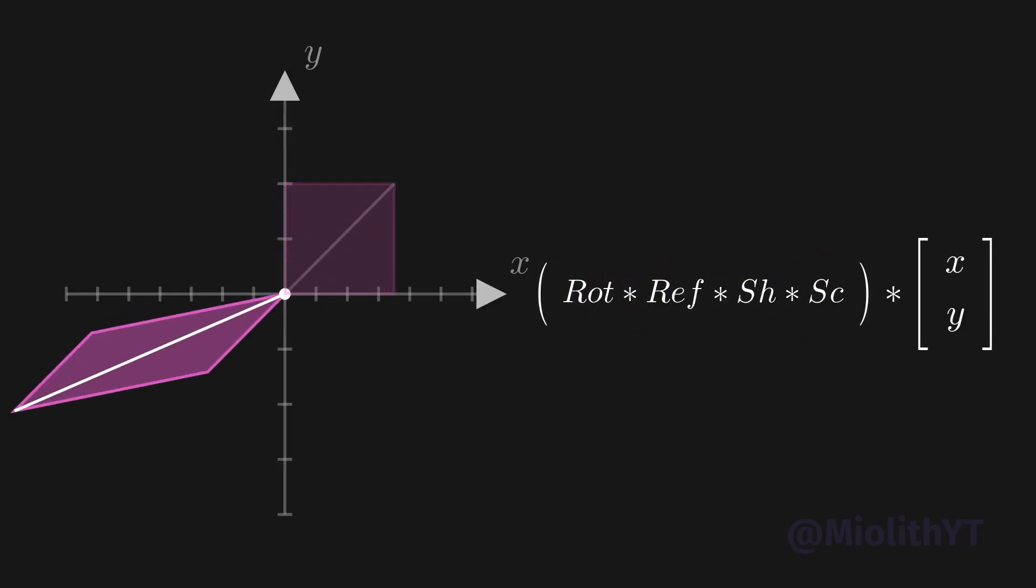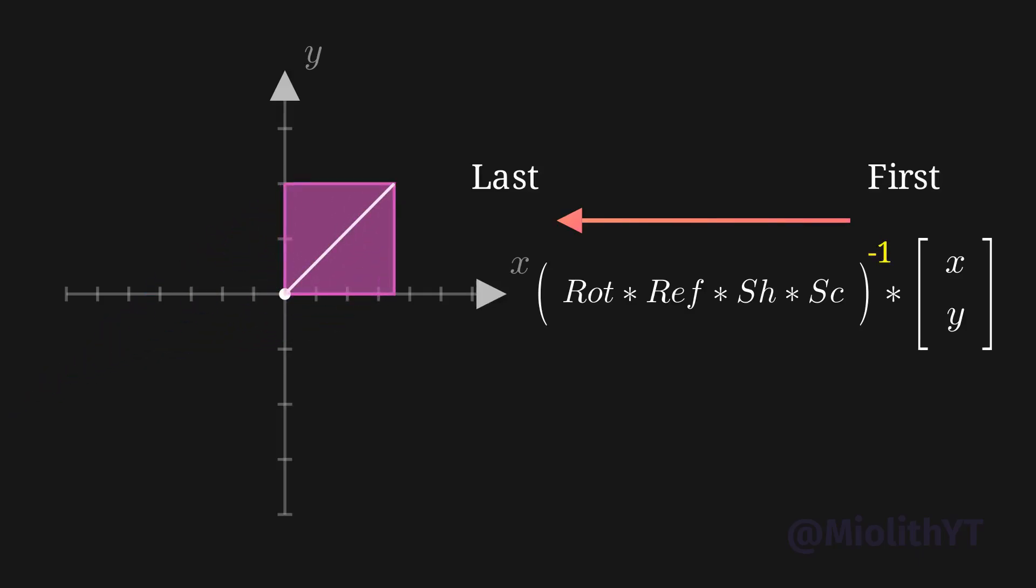All of which can be combined into single matrix by multiplying this transformation in right-hand order, meaning that the first transformations occur at the right of the product, up to the last transformation at the left, all of which can be reverted by computing the inverse matrix.